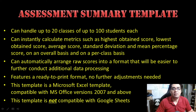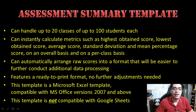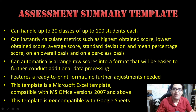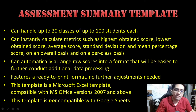What are the features of the Assessment Summary Template? This is a per-subject and per-class Assessment Summary Template. It can handle up to 20 classes of up to 100 students each. This template can instantly calculate metrics such as highest obtained score, lowest obtained score, average score, standard deviation, and mean percentage score, also known as the MPS. It can do this on an overall basis and on a per-class basis.